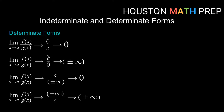Similarly, if we get a quotient of c over zero — again c being any non-zero constant — then we can say that that is going toward some positive or negative infinity. If we get a quotient where we have some non-zero constant c over a limit going to infinity, then we're going toward zero. And finally, if we get some infinite value over some non-zero constant, we can say that that is going to positive or negative infinity.